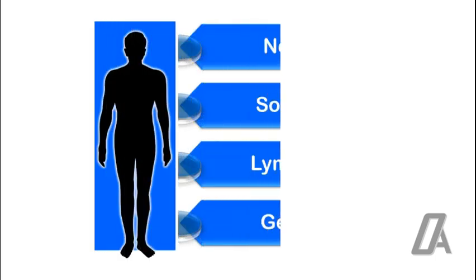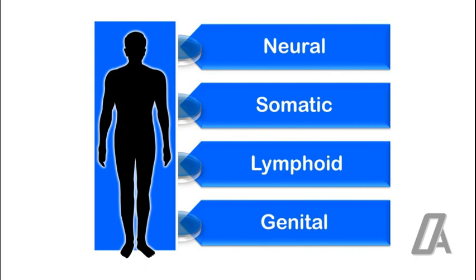Human body comprises of four major tissues: neural, somatic or general which includes muscles and bones, lymphoid, and genital or sexual tissue. These different tissues grow at different time and at different rates.